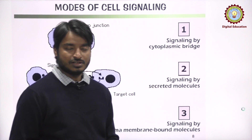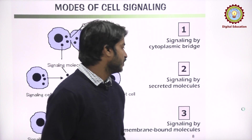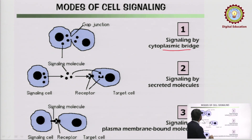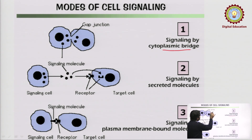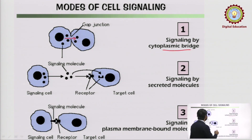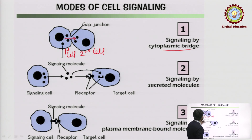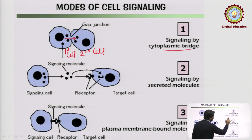There are various modes by which cells communicate with other cells. First is signaling by cytoplasmic bridge. In this case, one cell forms a cytoplasmic bridge with another cell and transforms the signal from one cell to the other by dissolving the membrane, allowing the signal molecule to move from the first cell to the second cell. Since it forms a bridge of cytoplasm, it is called a cytoplasmic bridge.